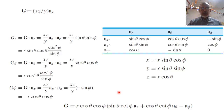We have now completed the review of vectors and coordinate systems. We can proceed to the first topic in electric and magnetic fields, which is Coulomb's law for the force between electric charges. See you in the next video.